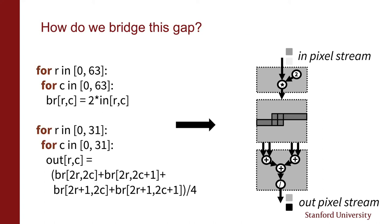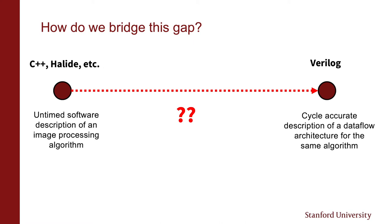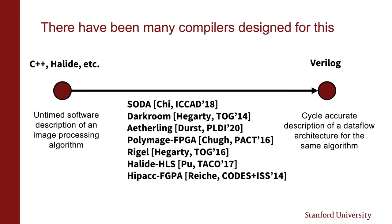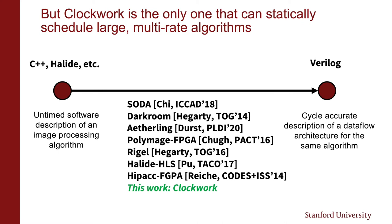So how do we bridge this gap between high-level imperative specifications of image processing algorithms and low-level efficient hardware implementations? It's a large gap. On the left we have languages like C++ and Halide, where algorithm designers give untimed software descriptions, and on the right we have languages like Verilog, where hardware designers give cycle-accurate descriptions of a data flow architecture. There have been many compilers designed to fill this gap, but only Clockwork can statically schedule large multi-rate algorithms.